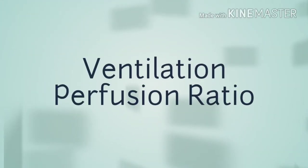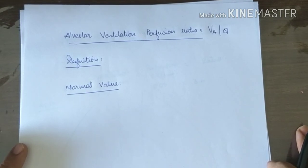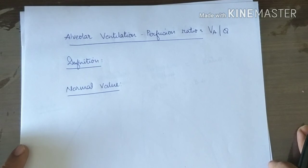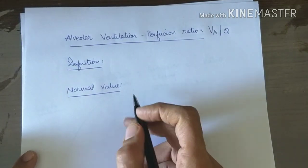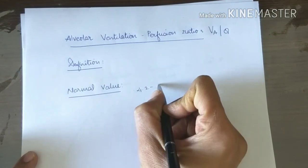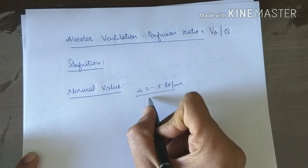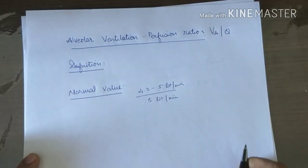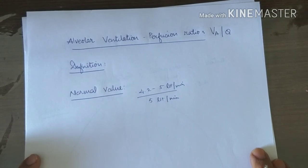Today's topic is Alveolar Ventilation Perfusion Ratio. It is the ratio of alveolar ventilation per minute to the quantity of blood flow to the alveoli per minute. The normal ventilation perfusion ratio is about 0.84 to 0.9, because ventilation per minute is 4.2 to 5 liters per minute and blood flow is 5 liters per minute. At this ratio, maximum oxygenation occurs.